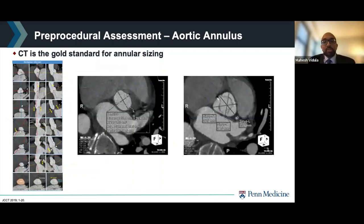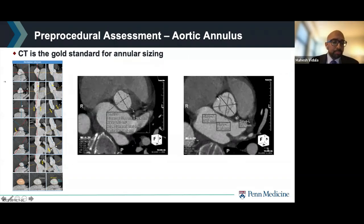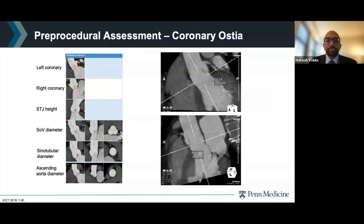CT is the gold standard for annular sizing. With CT, you can identify the annular plane using multi-planar reformats and obtain the area, perimeter, and diameters. These measurements are typically done in systole, when the annulus is at its largest. You can also quantify the amount and location of calcium, which is very important for procedural planning. CT can also provide measurements of the heights of the coronary ostia, important for determining the risk of coronary occlusion, and can help characterize other risk factors such as a long bulky cusp or a very small sinus of Valsalva, less than 30 millimeters.